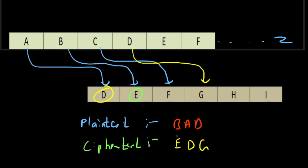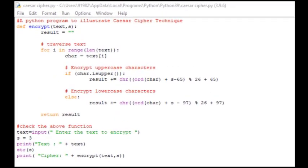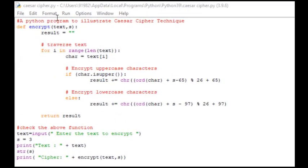This is how the Caesar cipher works. Now, how to implement it using Python? We will see the Python code for Caesar cipher technique.